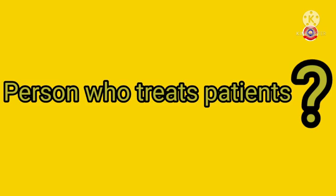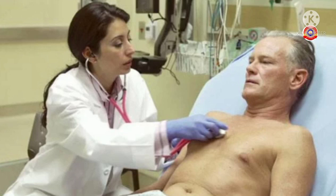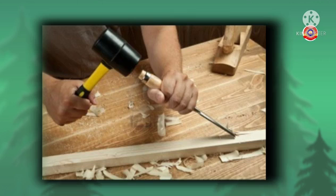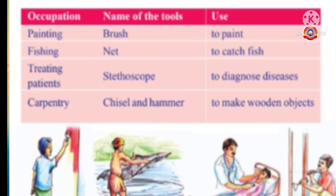My dear children, do you know who is the person who treats patients? Yes, doctor. And what is the tool used by the doctor? Doctors use a stethoscope to diagnose diseases. Can you name this occupation? Yes, this is carpentry. Chisel and hammer are the two tools used in carpentry work, and they are used to make wooden objects. For each occupation, we use different kinds of tools, and these tools make our work much easier.